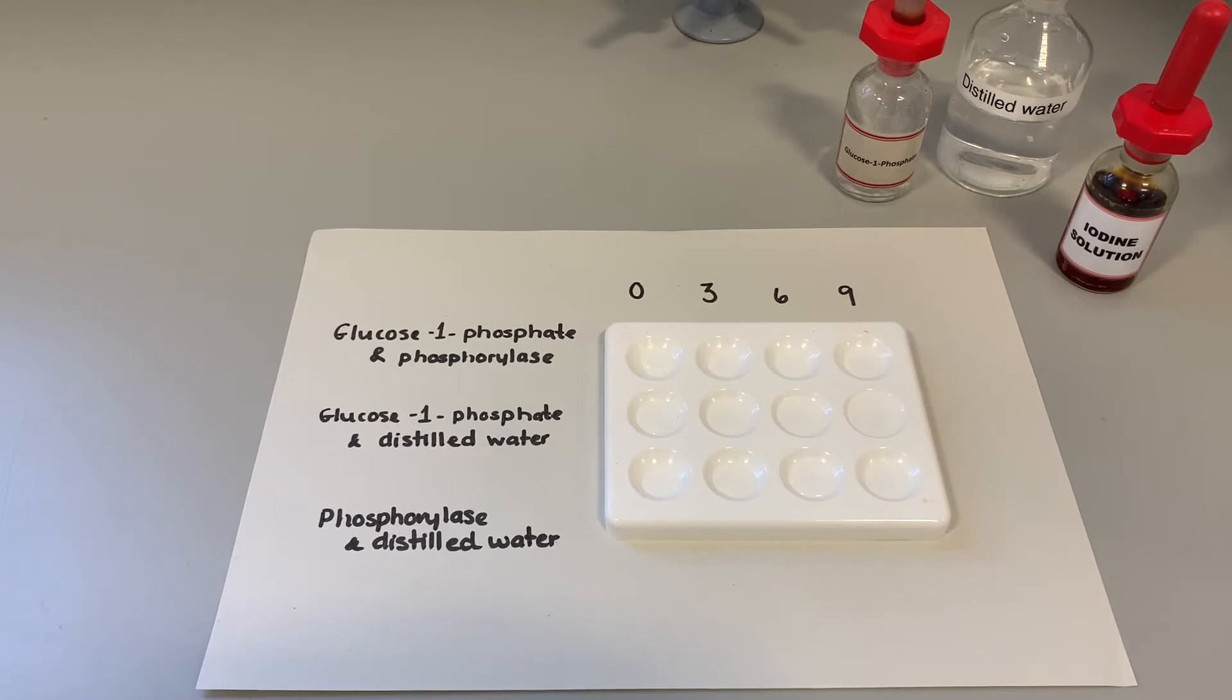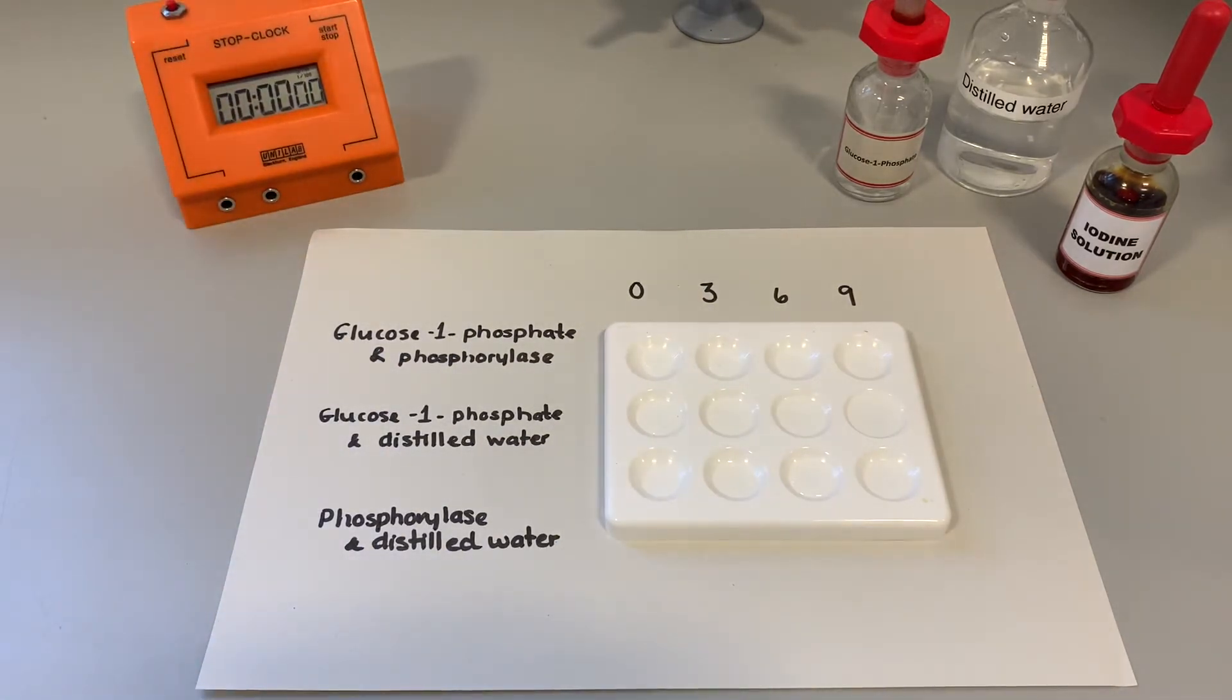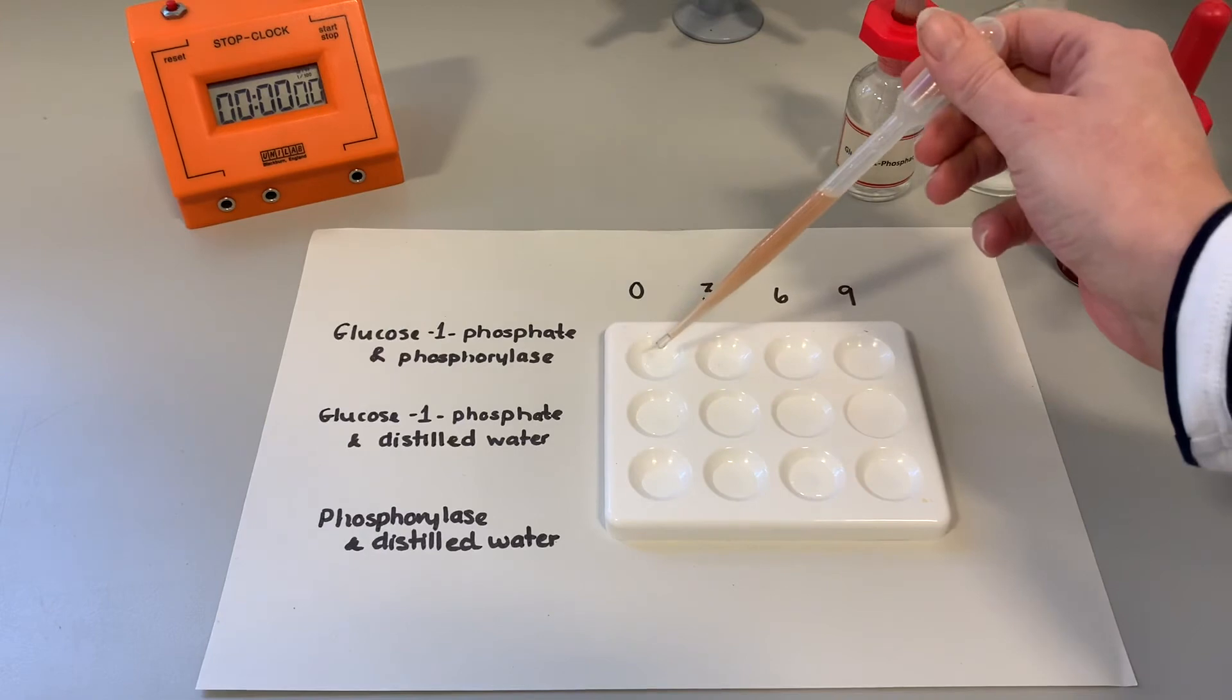So I'm going to add phosphorylase to the first row and the last row. And then we're going to start the timer. We're going to add a few drops of phosphorylase to this row here.